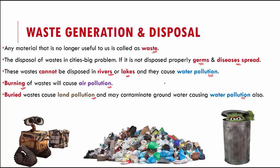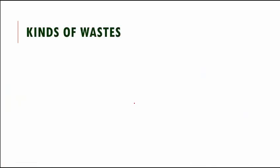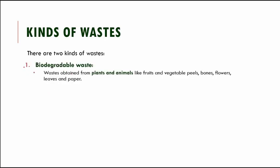It is very important to dispose of wastes correctly. To do that, we must understand the two kinds of waste. The first is biodegradable waste — waste obtained from plants and animals, such as fruit or vegetable peels, meat bones, flowers, dried leaves, or paper. These will rot over time and finally mix with soil, so they are called biodegradable or decomposable.